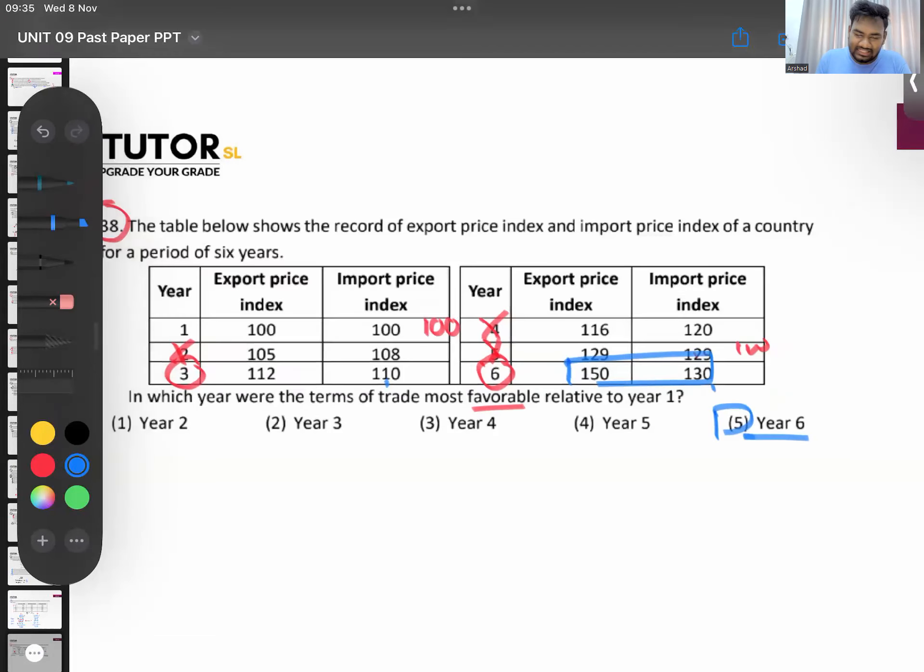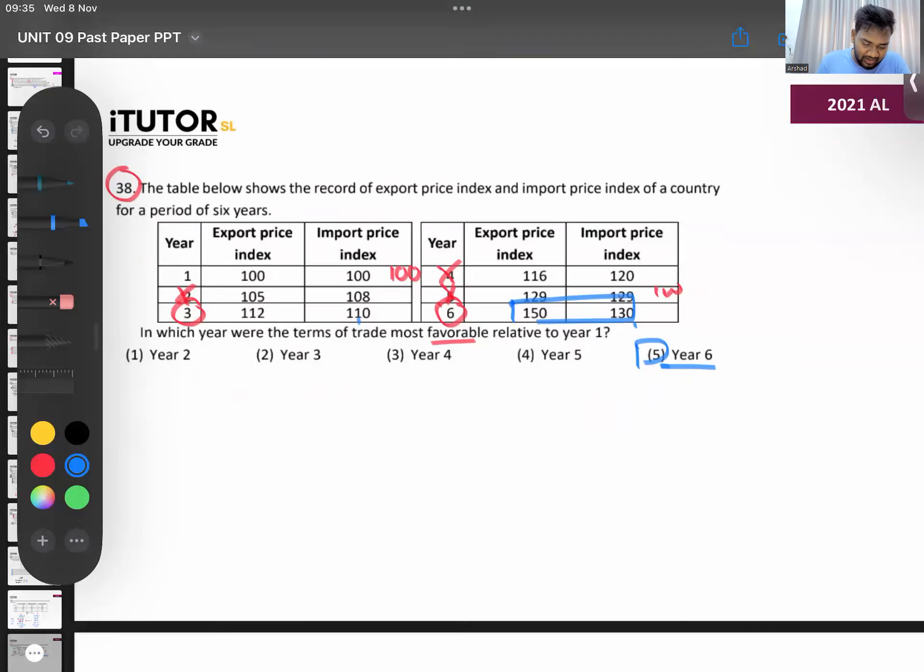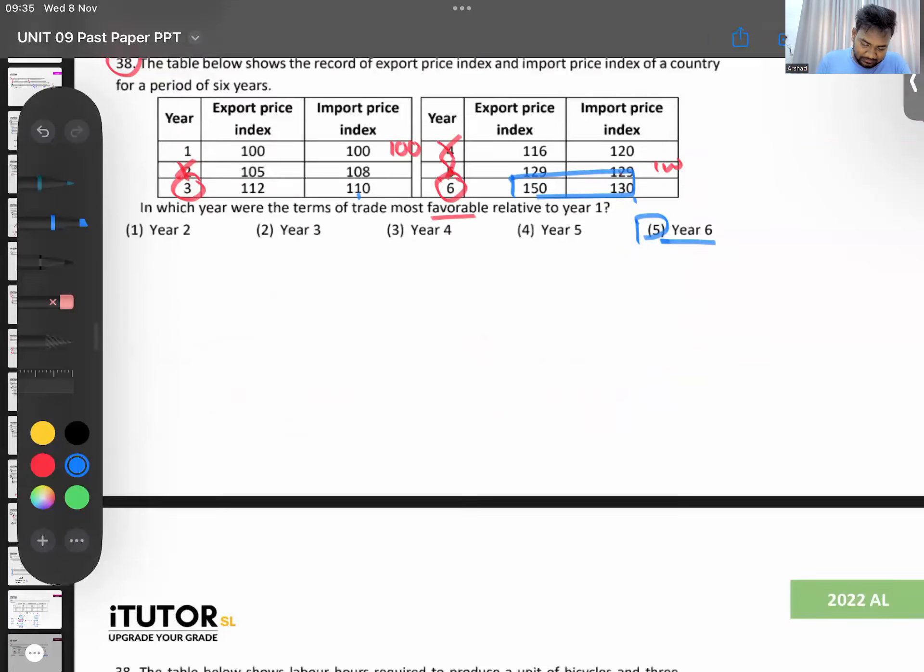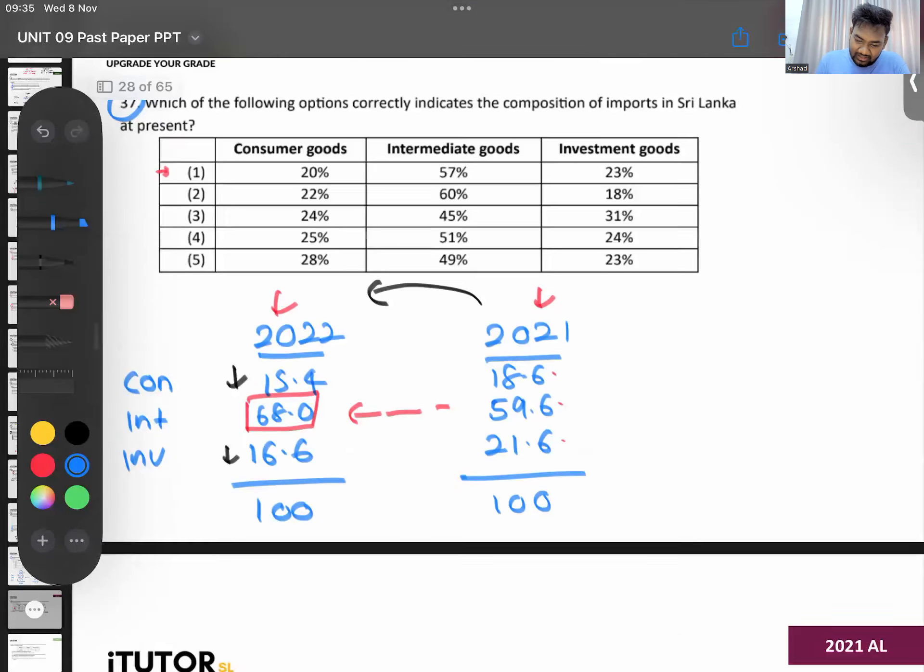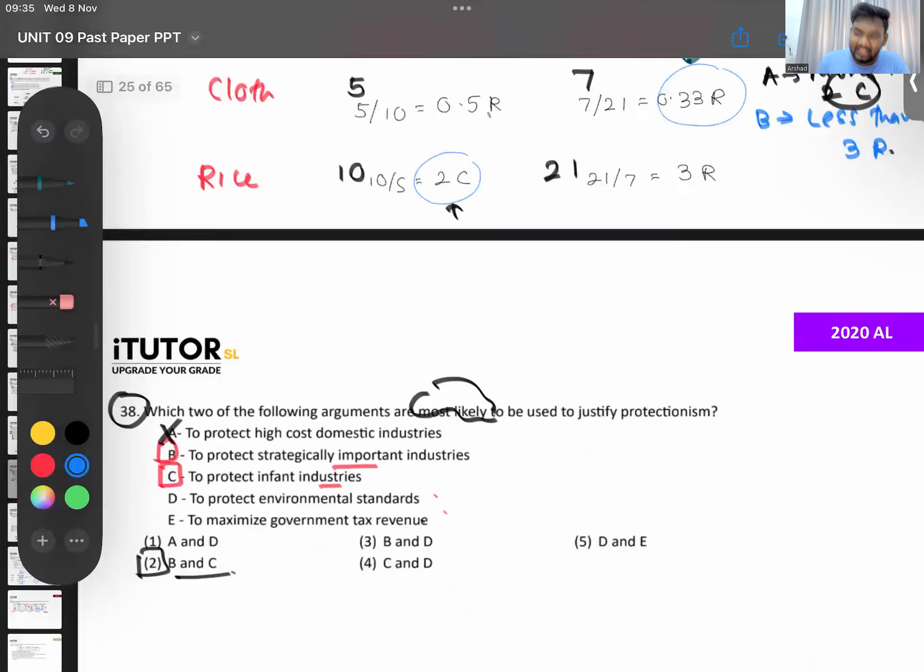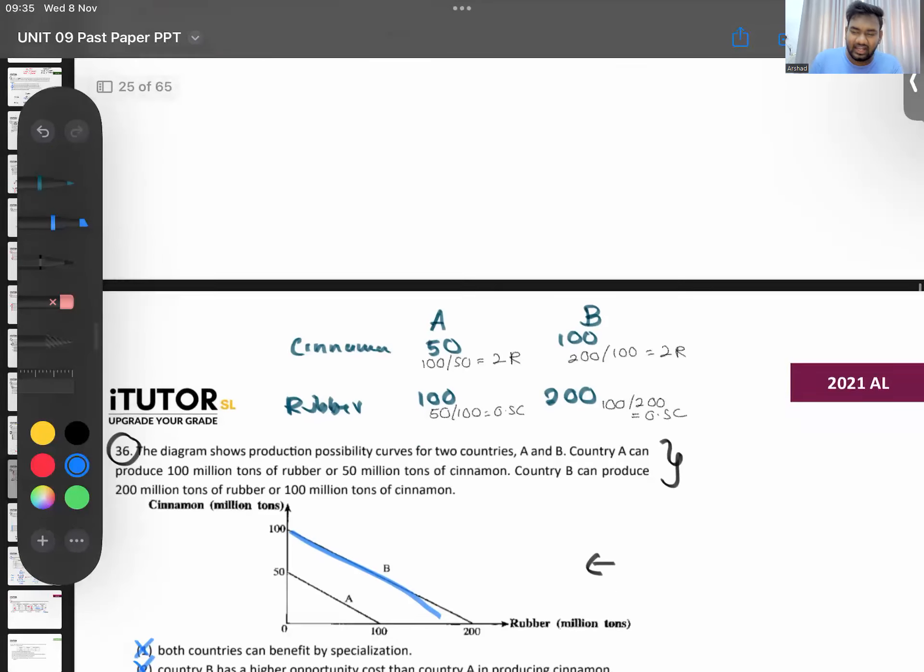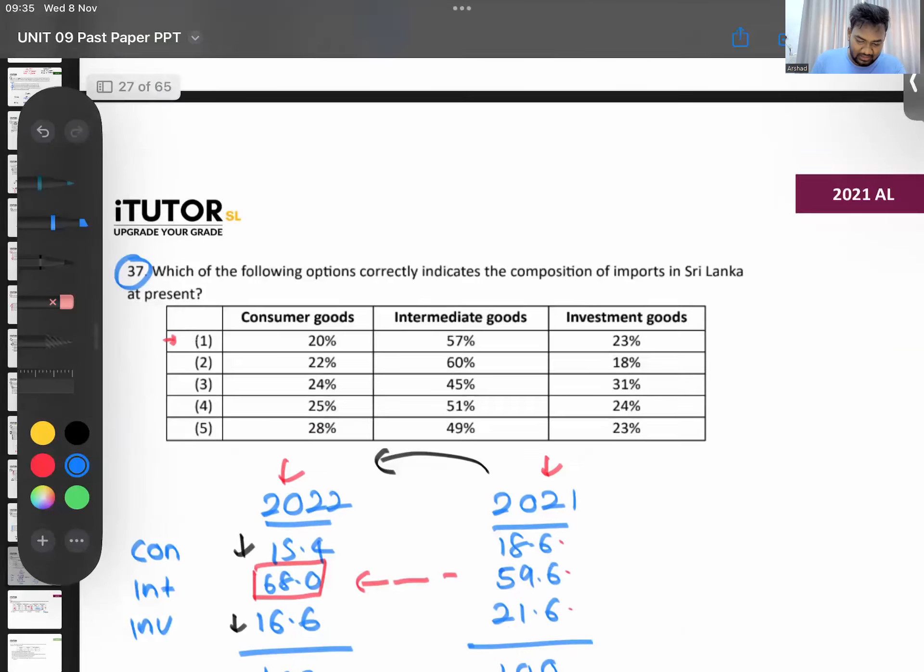Now these numbers you all need to know - your examiner knows that you don't have a calculator. So dividing 112 divided by 110, getting those numbers are not easy. The examiner knows you don't have a calculator, so the examiner also expects you to use your common sense and do this. You have to come to that point. 2021 question 38, that's it with the 2021 paper. Three questions from this, so that means six marks. I think easier six marks that you can get in your paper.